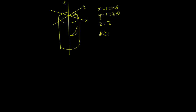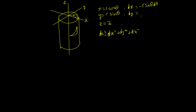We can see in that little triangle that ds² = dx² + dy² + dz². Now we need to find what dx and dy are. We differentiate the coordinate expressions, so dx = −r·sinθ dθ, and dy = r·cosθ dθ, and dz is still just dz.